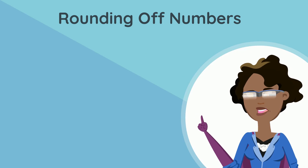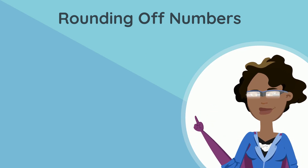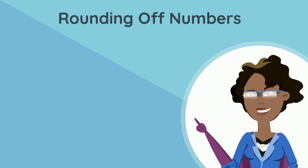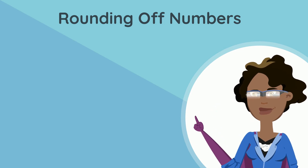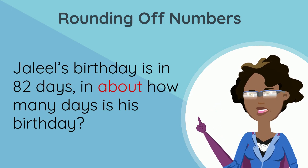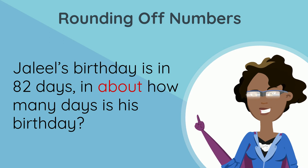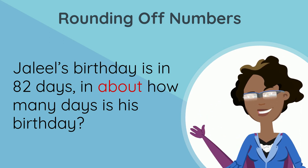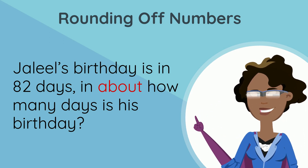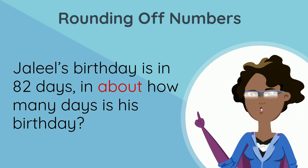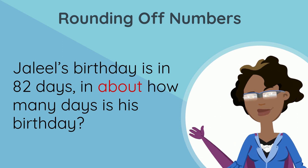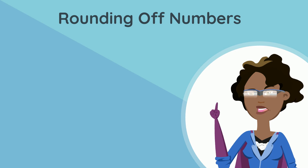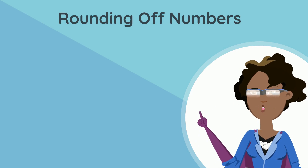But what if we have to round up or round down without using a number line? Let's look at this example. Jaleel's birthday is in 82 days. In about how many days is his birthday? We already know that the word 'about' tells us we must either round up or round down. So how do we figure out which way to round without using the number line?